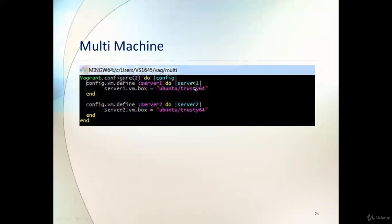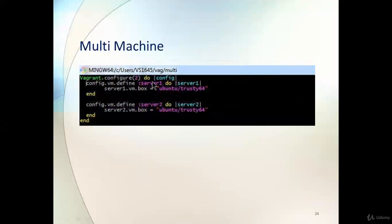The difference here is that `config` is a common variable used by both machines. Config defines two sub-variables — `server1` and `server2`. With `server1` we deploy Ubuntu Trusty 64 for server one, and with `server2` we deploy Ubuntu Trusty 64 for server two. When we run this file, it will create two virtual machines.